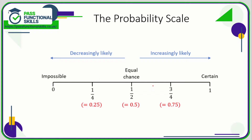Let's take a look at probability. Probability can be expressed on a probability scale from zero to one. Zero means the event is completely impossible, and one means it is 100% definite. If something is a 50/50 chance, like throwing a coin and it landing on heads, that's an equal chance, so that would be 0.5 or one half.